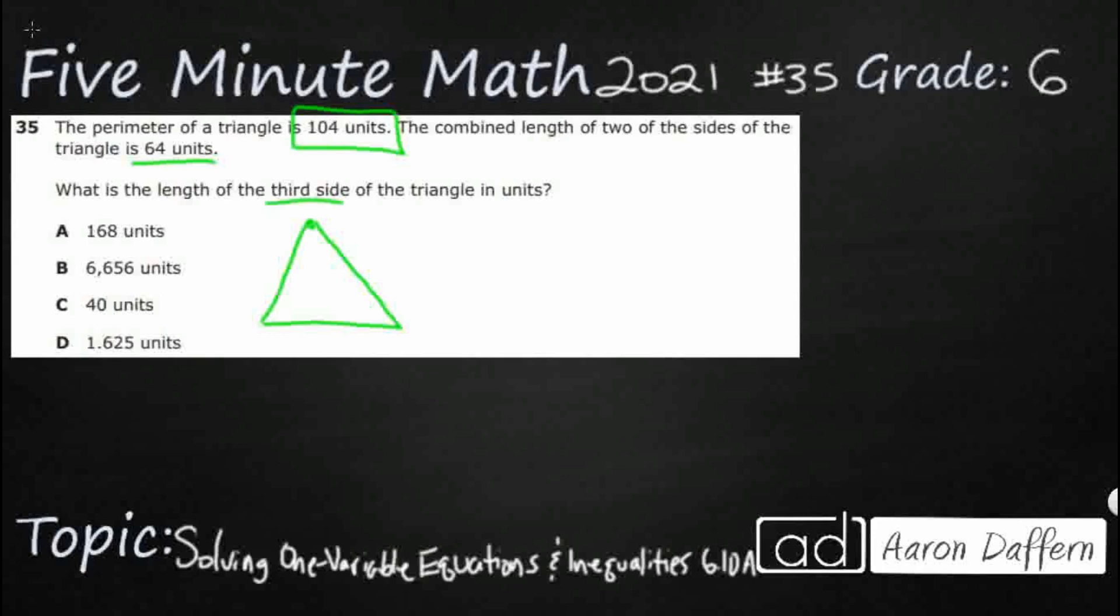Now there's nothing that really gives us a picture of do we add, subtract, multiply, or divide. So let me show you why it's not a good idea just to pick a random operation. Let's take 104 and 64 and let's add them. That's going to be 168. Look at that. Maybe the answer is A.